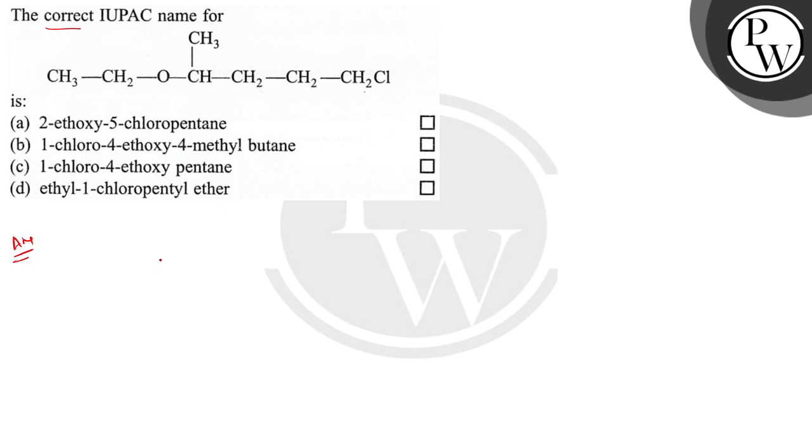Let's do the question. The compound is CH3-CH2-O, this is CH3-CH2-CH2-CH2-Cl.